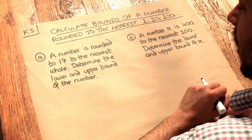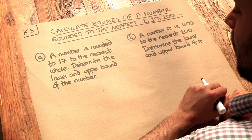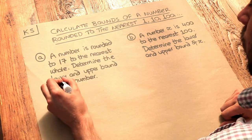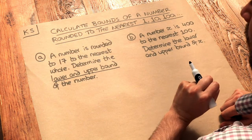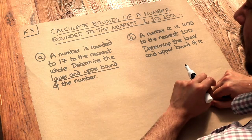So we've got this first problem here, a number is rounded to 17 to the nearest whole. Determine the lower and upper bound of the number. Now what lower and upper bound mean is the smallest and the largest number that we could have started with that would have rounded to 17.